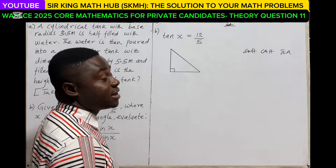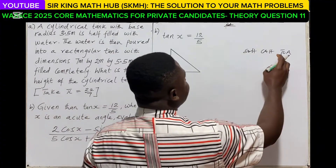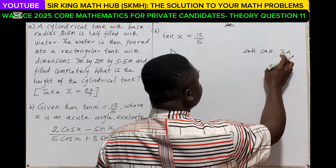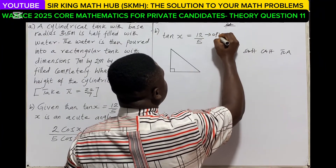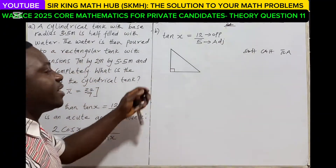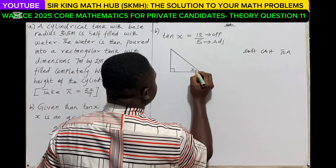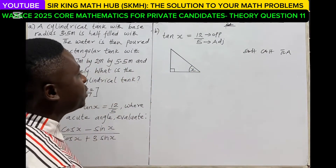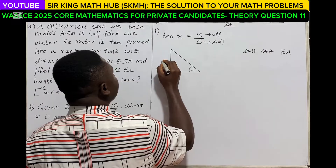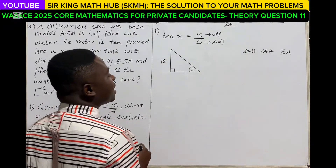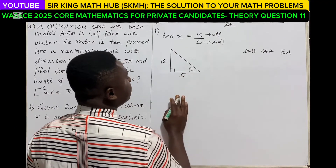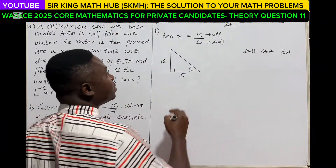We draw a right angle triangle and represent the acute angle as x. Since tan x equals opposite over adjacent, and tan x = 12/5, the side facing the acute angle — the opposite — is 12, and the adjacent side is 5. We now need to find the hypotenuse, which is the longest side.